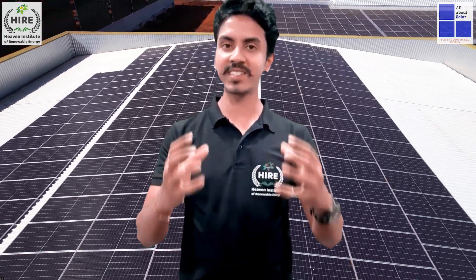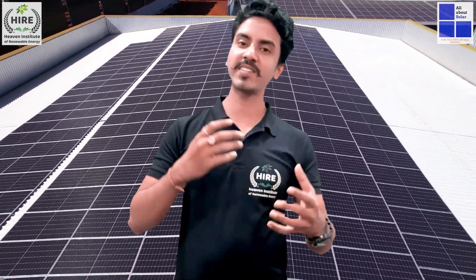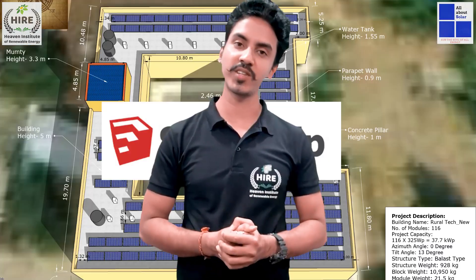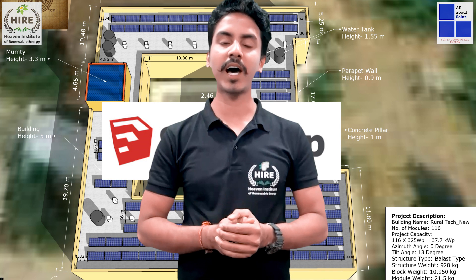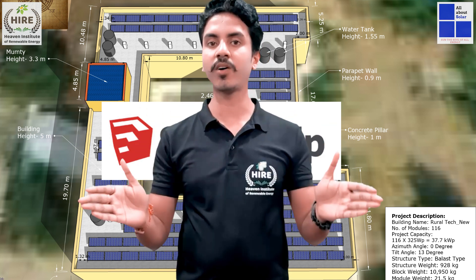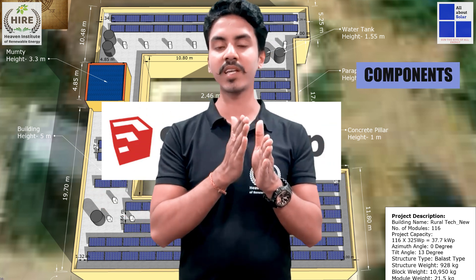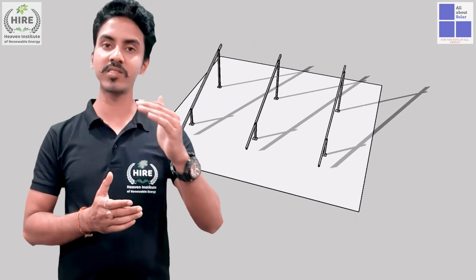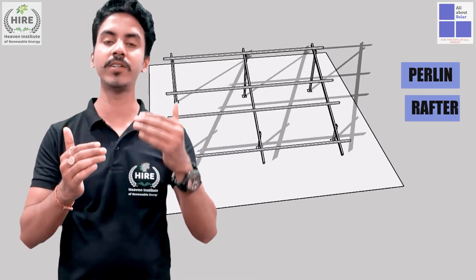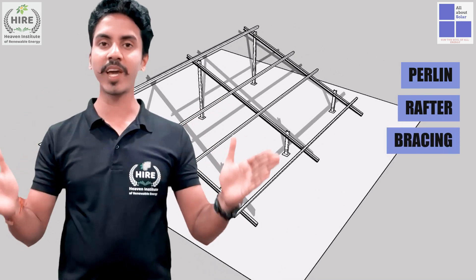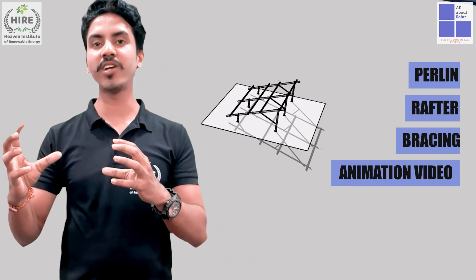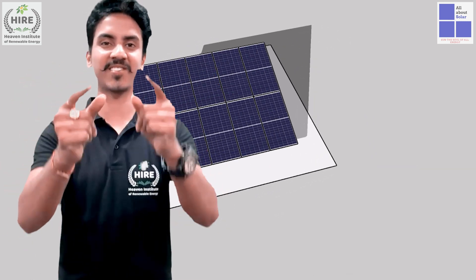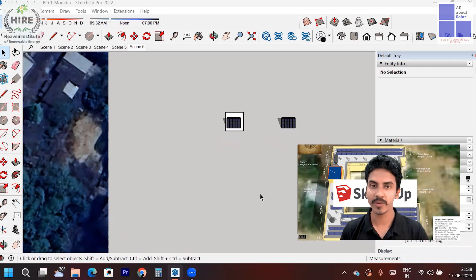Let's make an informative video on solar power plant design using SketchUp. In this video I'm going to give you an idea of how to create components, how to place the panel above structures, what is the role of purlin, rafter, and bracing, and how you can create an animation video using tags in SketchUp. Without wasting any time, let's get started. Here in this SketchUp layout you can see I already have one model with a structure created.